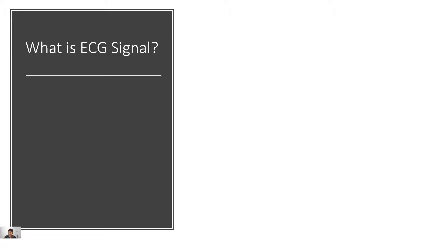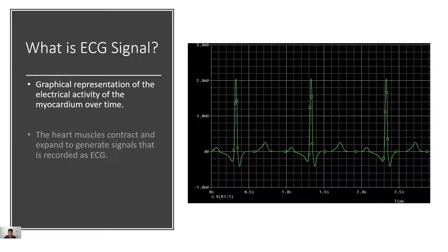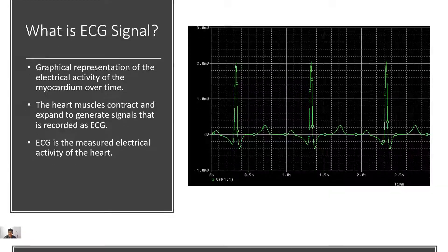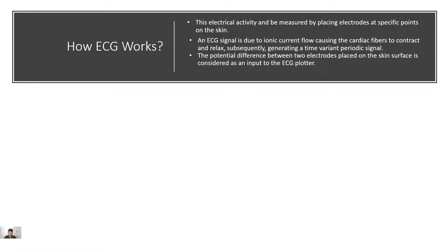What is an ECG signal? The heart muscles contract and expand to generate signals that are recorded as ECG. ECG measures the electrical activity of the heart — it is a graphical representation of the electrical activity of the myocardium over time, and this is called an ECG signal.